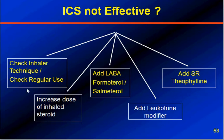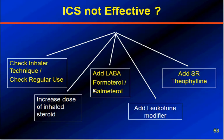For example, if he is taking 400 micrograms, make it 800. If he is taking 200, make it 400. Even then, if the symptoms are not controlled, add a long-acting bronchodilator — a long-acting beta-agonist like formoterol or salmeterol.